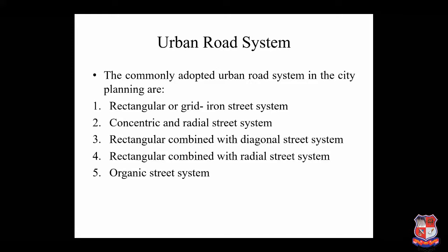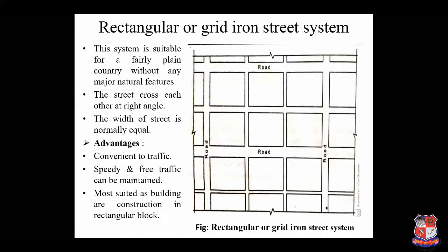Next we will discuss the urban road system. In city planning there are five types of urban road systems: first, rectangular or grid-iron street system; second, concentric and radial street system; third, rectangular combined with diagonal street system; fourth, rectangular combined with radial street system; and last, organic street system.